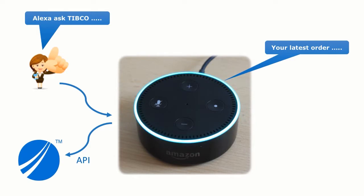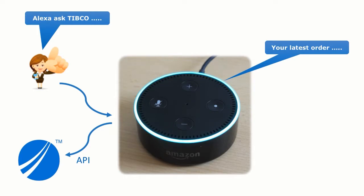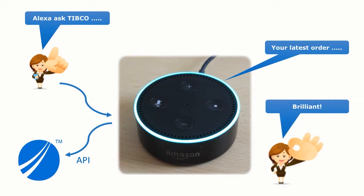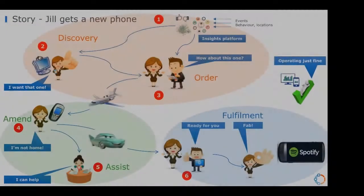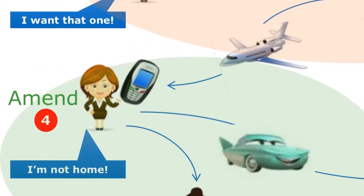Alexa reports: "Your latest order was received today. Its order number is 141F and is planned to arrive on the 27th of February 2017. Do you want to know what products you have ordered?" Jill confirms, and Alexa replies: "You have ordered two products: number one is 1 gigabyte of data and 300 minutes per month; number two is an Apple iPhone 6S, 128 gigabyte, Space Gray — by the way, a very nice phone. Is there anything else I can do for you?" Jill says no.